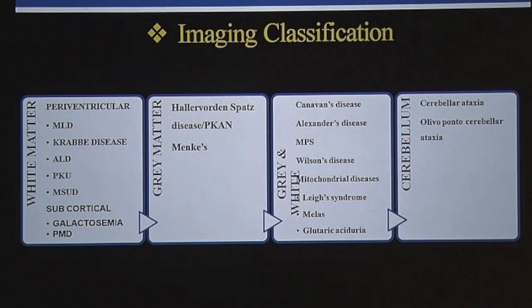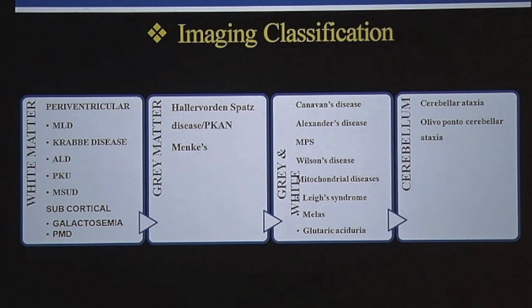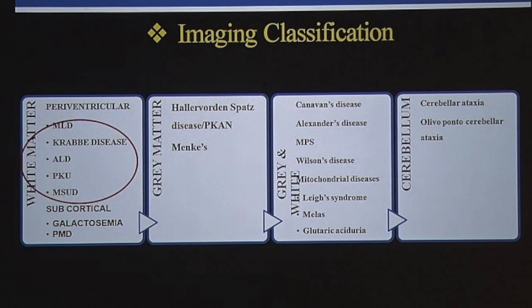This is a slide we are going to return to repeatedly so that we know what we are talking about. We will see which conditions have a very classic appearance that allows the radiologist to make the diagnosis. We will start off with five common conditions which affect periventricular white matter to begin with.